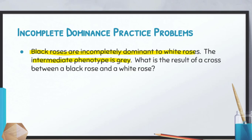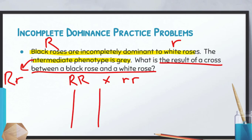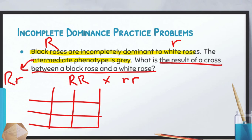What is the result of a cross between a black rose and a white rose? We need to first assign letters: big R for black roses and little r for white roses. To be a black rose you need two capital R's, and the white rose has two lowercase r's. The intermediate phenotype is gray, which will be big R, little r. Let's build our Punnett square — putting our white rose on top and black rose on the side, then crossing them just like in the previous video.